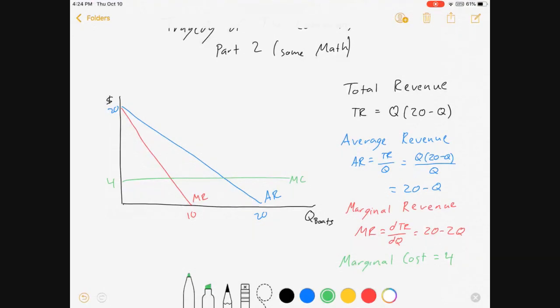And so what I'm going to be doing here is let's just start by finding how many boats will be in the market, and how many boats would be in the market that would maximize industry well-being.